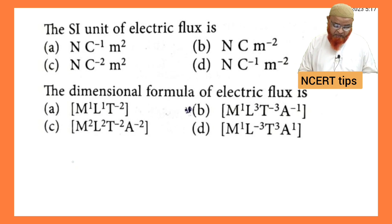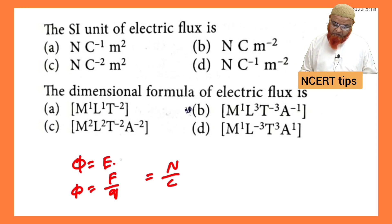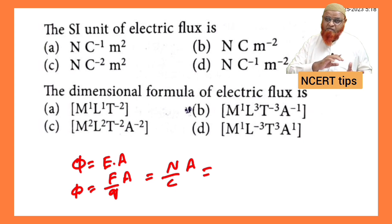First, find the units. If you take E dot A, where A is area, so Newton per Coulomb into area. How can you find out dimensions from these units?